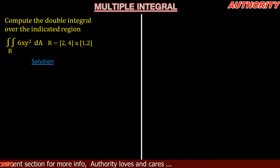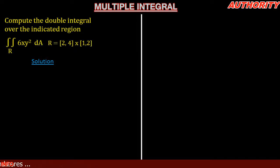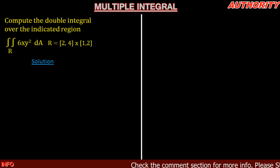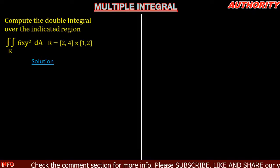We have the variables x and y, meaning we are going to integrate with respect to x and with respect to y. After this integration, what we are looking for is the area of the indicated region — that's why we have dA.